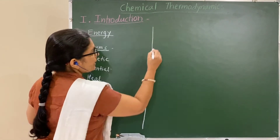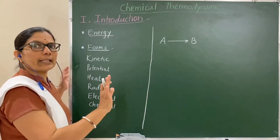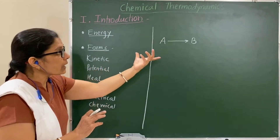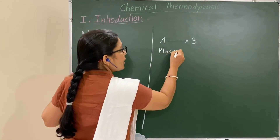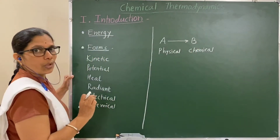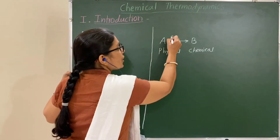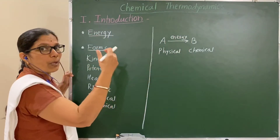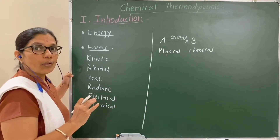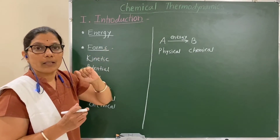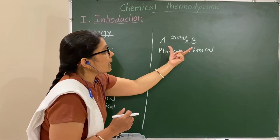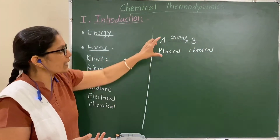Suppose A is converted into B — this is a chemical reaction or chemical equation. In thermodynamics, it is called a process. This process may be a physical process or a chemical process — physical transformation or chemical transformation. During that reaction, the energy changes: energy may be absorbed or energy may be evolved. That is studied in thermodynamics. So, thermodynamics is concerned with the energy changes during physical and chemical transformation.